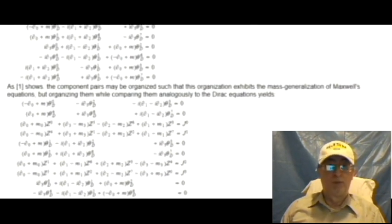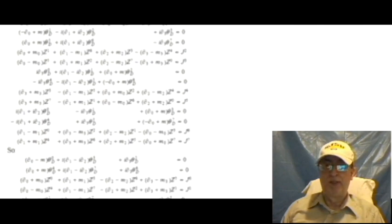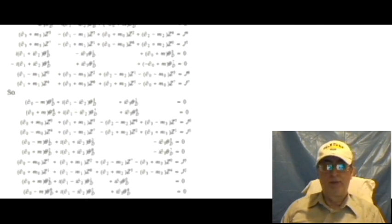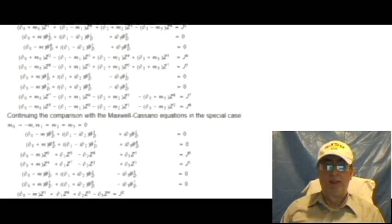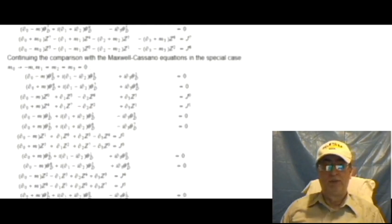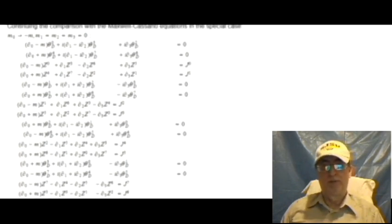As reference 1 shows, the component pairs may be organized such that this organization exhibits the mass generalization of Maxwell's equations. But organizing them while comparing them analogously to the Dirac equations yields the following. Continuing the comparison with the Maxwell-Casano equations in the special case, m sub 0 goes to negative m, and m sub 1 equals m sub 2 equals m sub 3 equals 0.